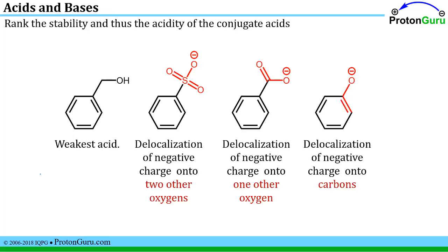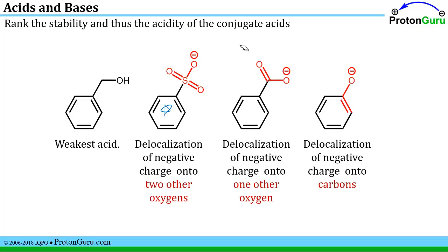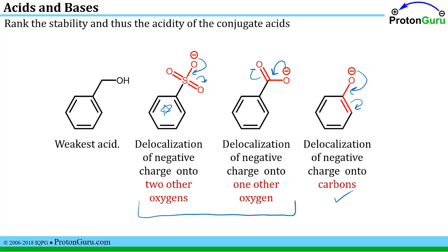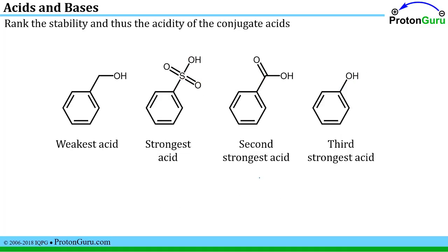Now we rank the stability of the three species that do have resonance. In one case, delocalization of the negative charge is possible onto two other oxygens. In the second case, we can delocalize the electrons onto only one other oxygen. In the third case, we can only move the negative charge onto carbon atoms because there are no other oxygen atoms in the molecule. Since oxygen is better at stabilizing a negative charge than carbon, the first two cases provide more stability. The one where you delocalize onto two oxygens is more stable than the one with only one, giving us a full ranking: weakest acid had no resonance; strongest had the most resonance onto oxygens; second strongest had resonance onto one oxygen; third strongest had resonance only onto carbon atoms.